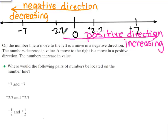And the last number we're going to place is one half and negative one half. Those are closer to zero. I know where one half goes—it's about right here. And so negative one half is going to be the same distance but on the opposite side of zero.